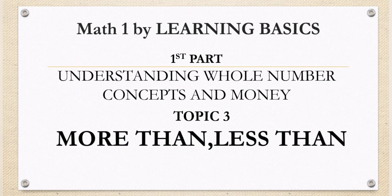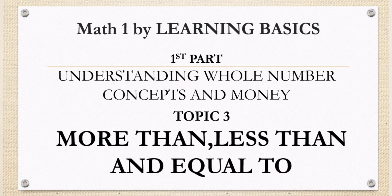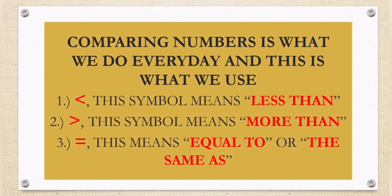Topic 3: More Than, Less Than, and Equal To. Comparing numbers is what we do everyday, and these are the symbols we use. This symbol means less than. This symbol means more than. These two parallel lines mean equal to, or the same as. Again: less than, greater than or more than, and equal to or the same as.